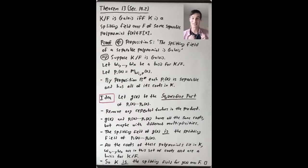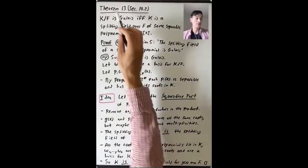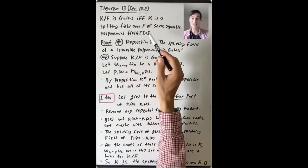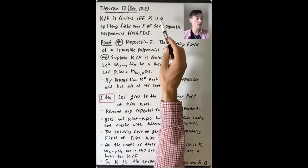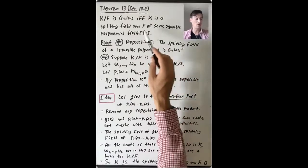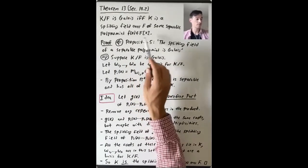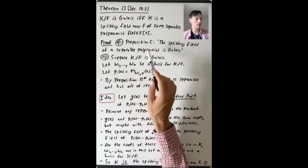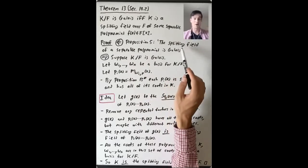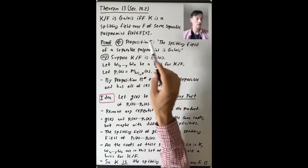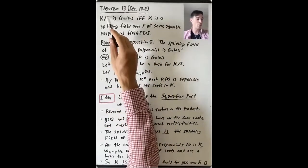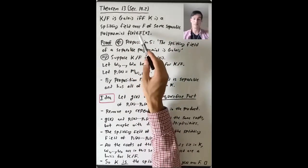Our first goal in this last video of this lecture is to prove Theorem 13 in Section 14.2, of which we already proved a big part — Proposition 13 Star. What remains is to show that K over F is Galois if and only if K is a splitting field over F for some separable polynomial f(x) in F[x]. One direction — that the splitting field of a separable polynomial is Galois — was shown in Proposition 5, so we just need to prove the forward direction: every Galois extension is the splitting field of some separable polynomial.